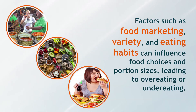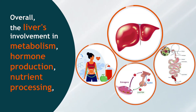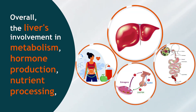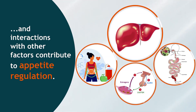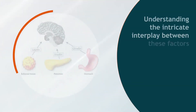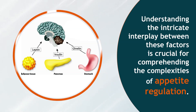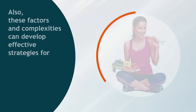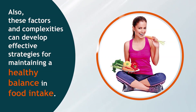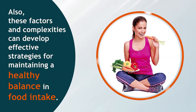Factors such as food marketing, variety, and eating habits can influence food choices and portion sizes, leading to overeating or undereating. Overall, the liver's involvement in metabolism, hormone production, nutrient processing, and interactions with other factors all contribute to appetite regulation. Understanding the intricate interplay between these factors is crucial for comprehending the complexities of appetite regulation and developing effective strategies for maintaining a healthy balance in food intake.